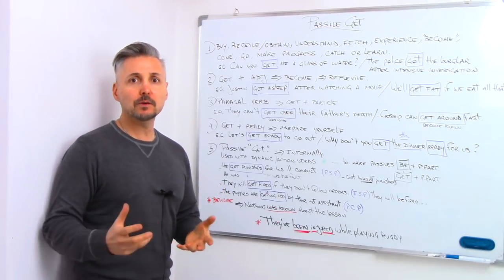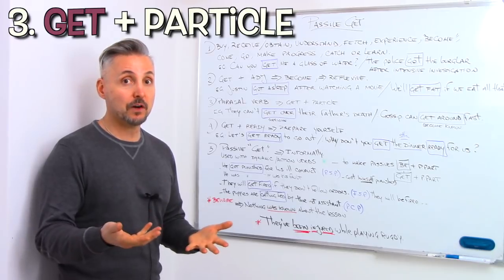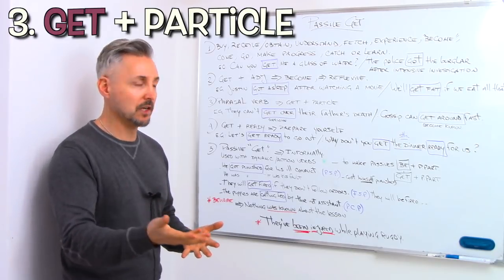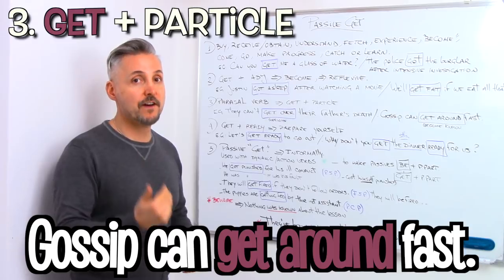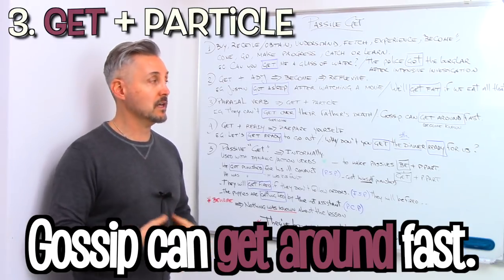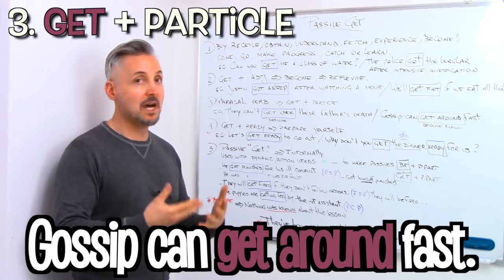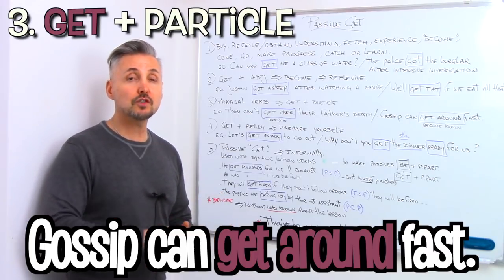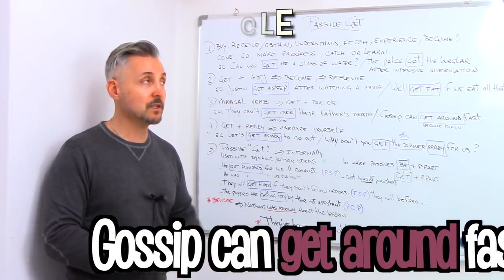Now another usage is as a phrasal verb. So get plus particle. Gossip can get around fast. Get around means become known. If you wish to watch a lesson on phrasal verbs, you may click here.